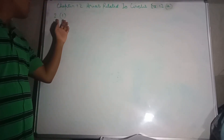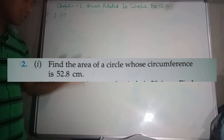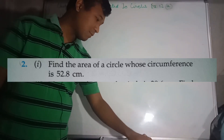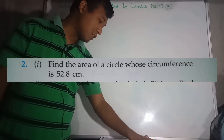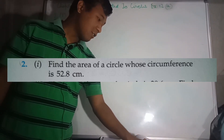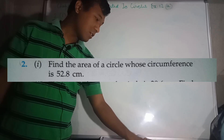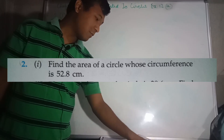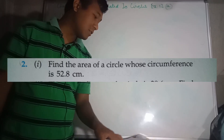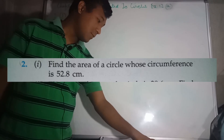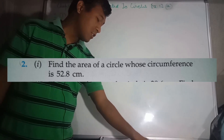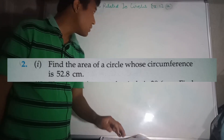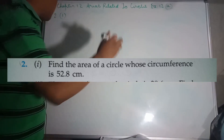We will solve Question number 2, sub number 1. Find the area of a circle whose circumference is 52.8 cm. So we need to find the area of a circle, given that the circumference is 52.8 cm.